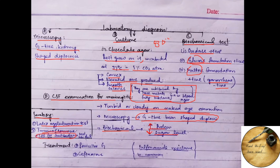Coming towards the treatment of disease caused by Neisseria meningitidis. So it can be treated using penicillin and ceftriaxone. And among the Neisseria meningitidis, sulfonamide resistance is common.